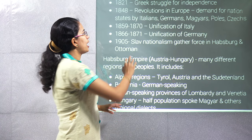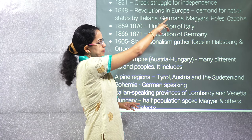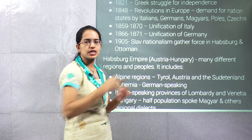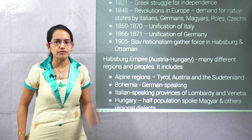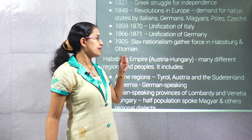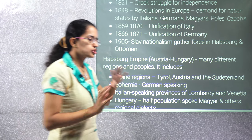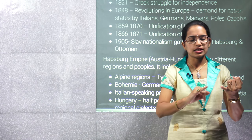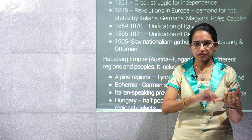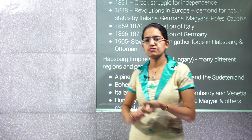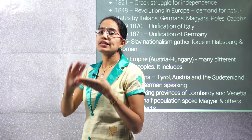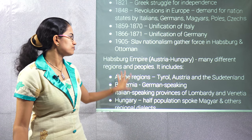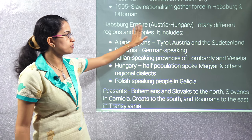During this time, the Greek struggle gained momentum. Finally, the unification of Italy and Germany are very, very important for this chapter. Since we are talking about nationalism in Europe, the major topics would be the French Revolution, the unification of Germany, the unification of Italy, and the revolt in the Balkan region. The Balkan region was mainly the Habsburg Empire of Austria and Hungary.